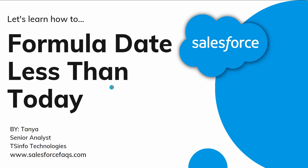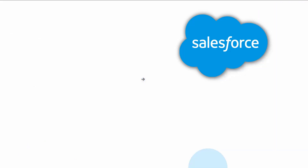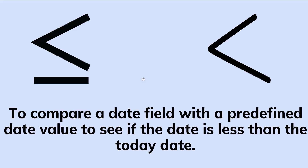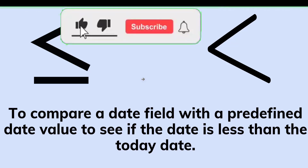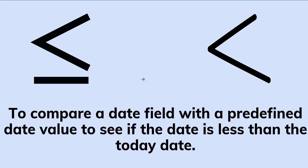Hello everyone, welcome to the channel. Today in this video we are going to learn how to create a formula in Salesforce to check whether a date is less than today or not. We are going to learn this concept for both Salesforce Lightning as well as the Classic edition. To check this, you have to use comparison operators — less than or less than or equal to — to compare the two dates.